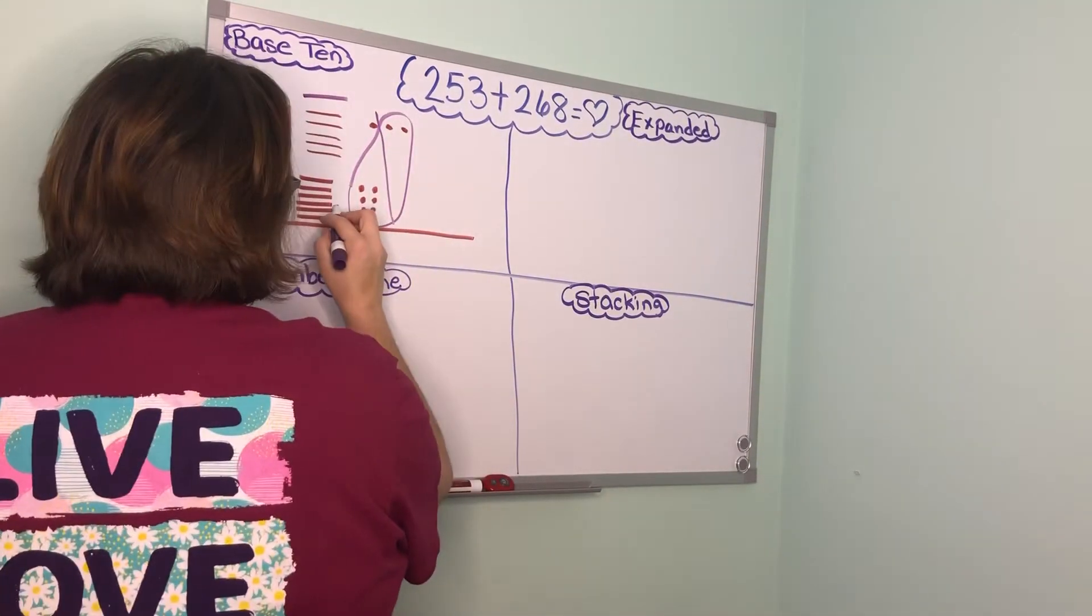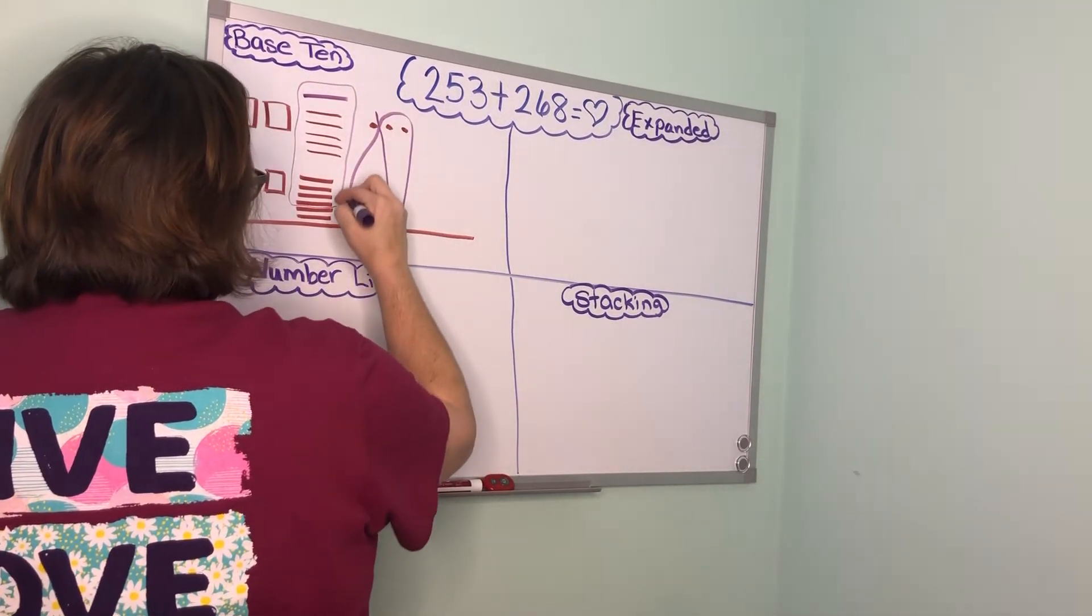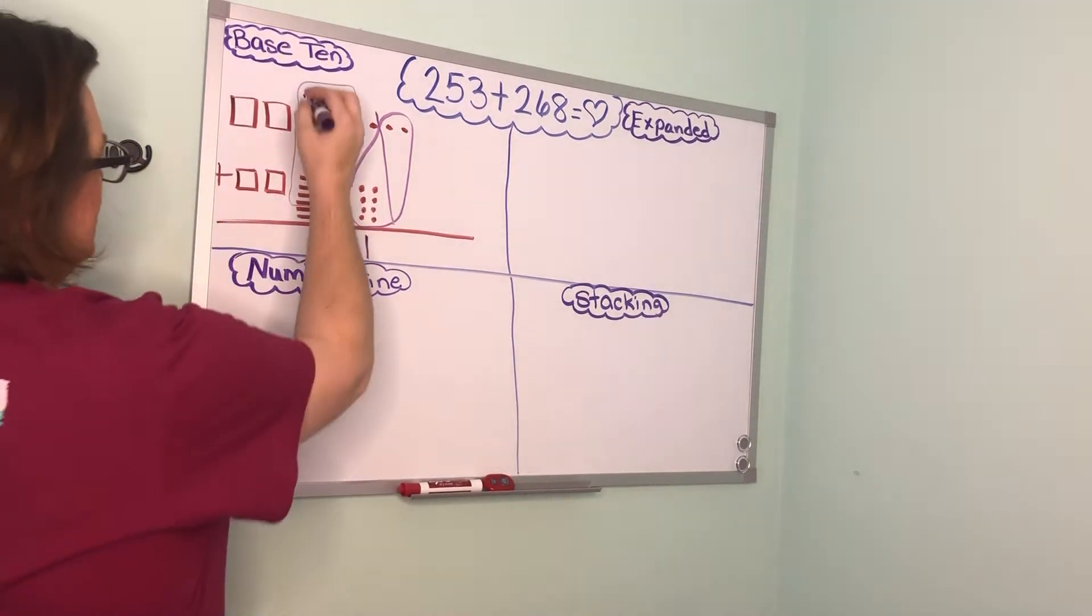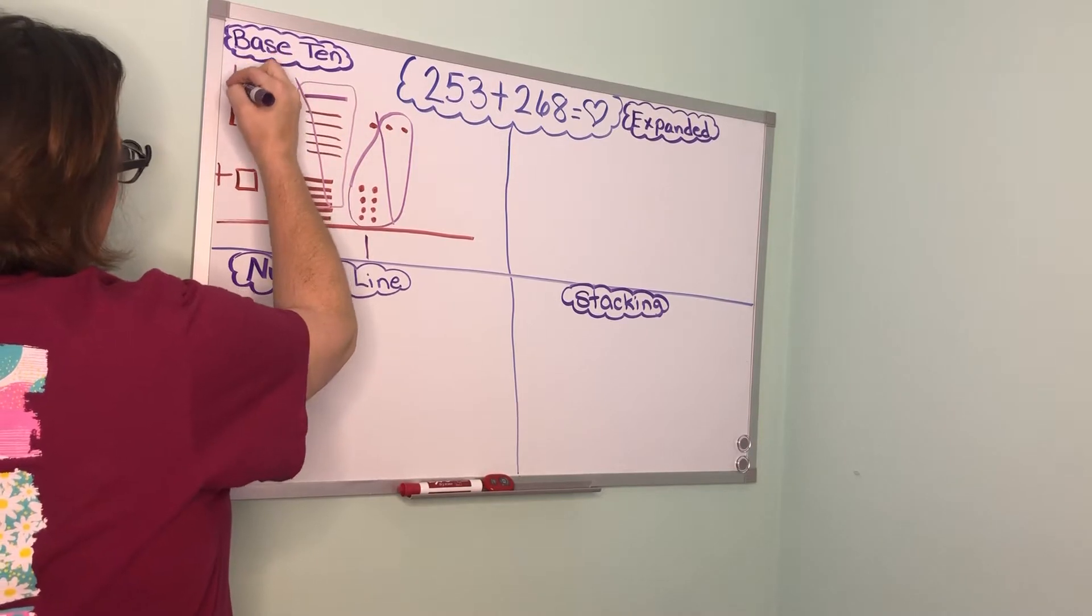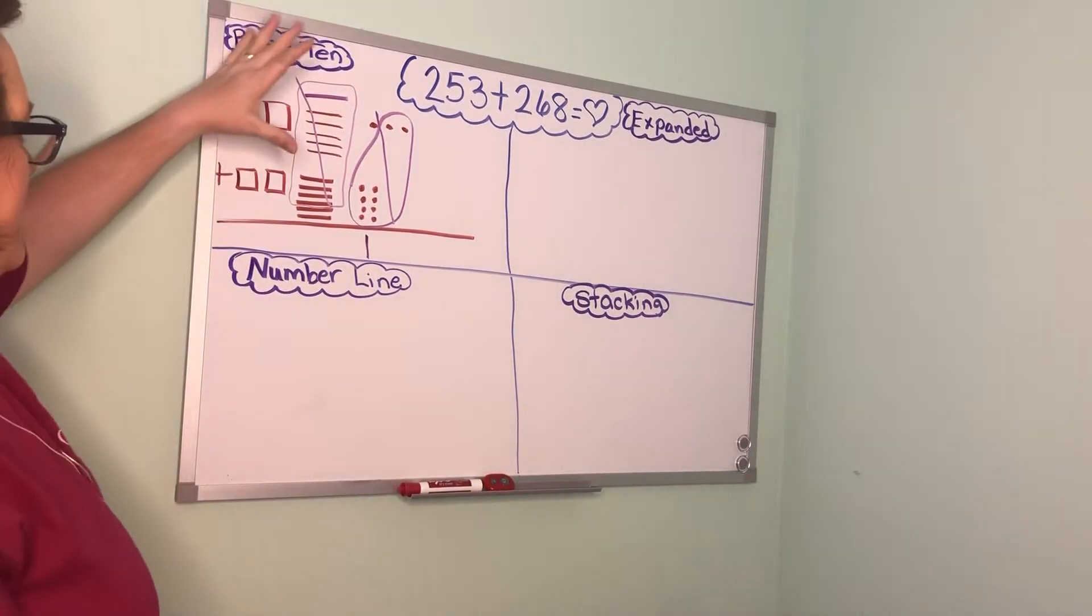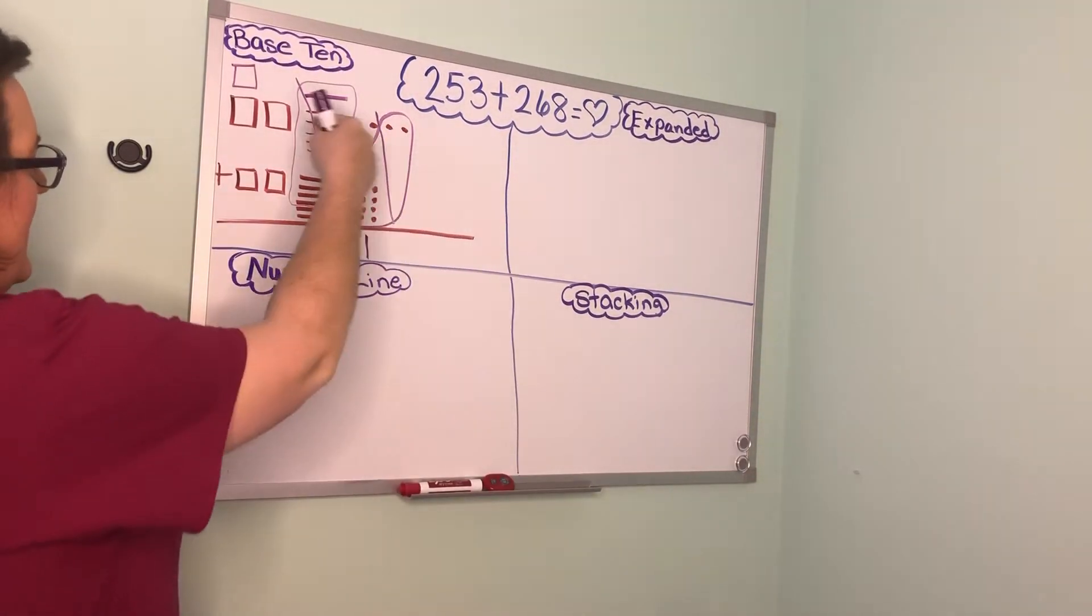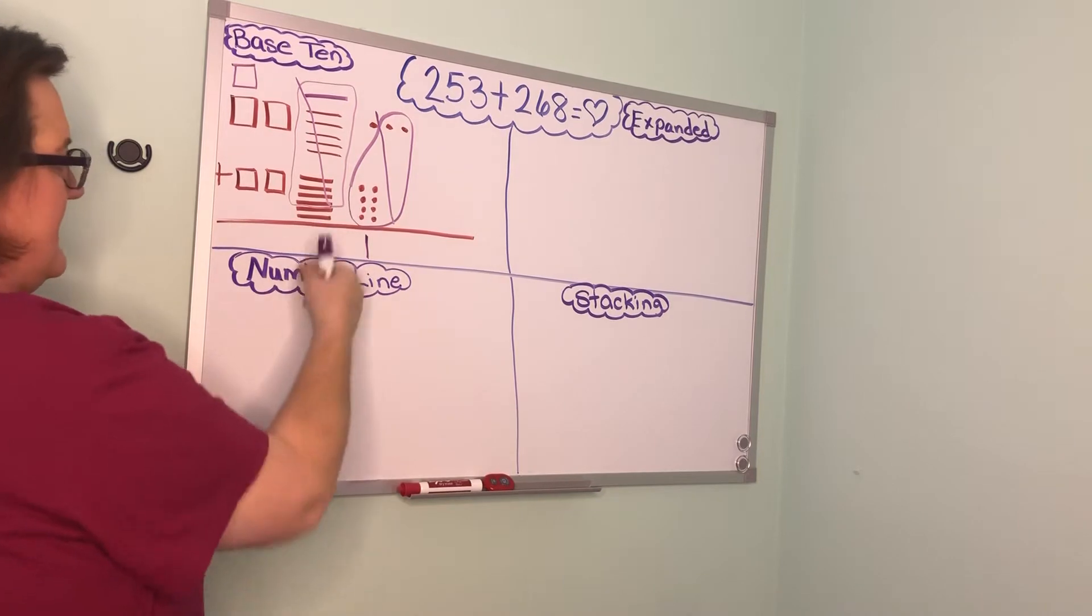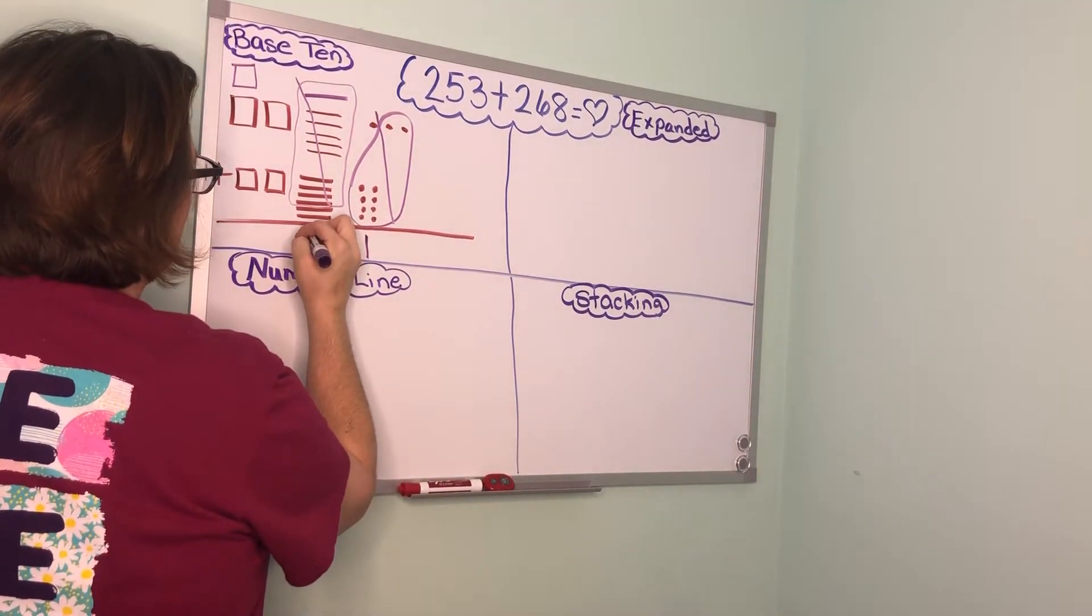So I'm going to do that. You can see right here I group that 10. I'm going to put a mark through that and I'm going to come over here and I'm going to give myself a hundred. So I compose 10 tens to make a hundred. Now I go back to my tens. I cannot compose another 10 so I'm left with two tens.